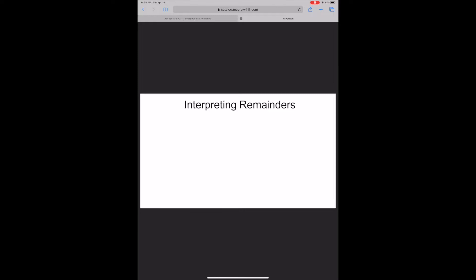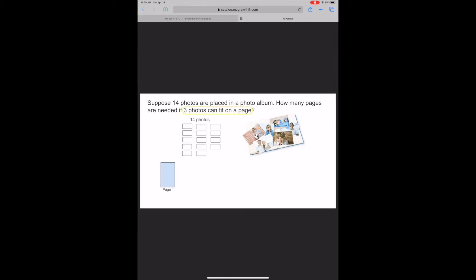Interpreting remainders. Suppose 14 photos are placed in a photo album. How many pages are needed if three photos can fit on a page? Since each page holds three photos, place three photos on this page. There are still more photos, so use another page. There are still more photos to place in the photo album. Continue to use more pages until all of the photos are on a page.